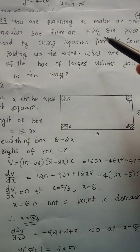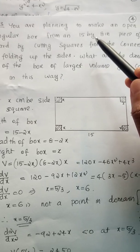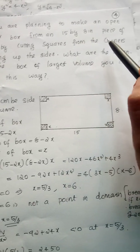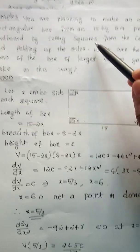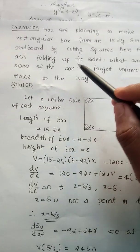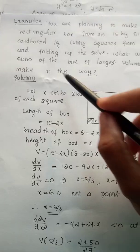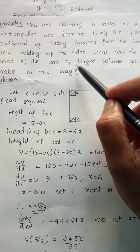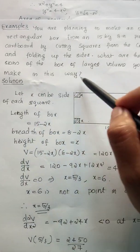We have to discuss: you are planning to make an open rectangular box from a 15 by 8 inch piece of cardboard by cutting squares from the corners and folding up the sides. What are the dimensions of the box of largest volume you can make in this way?